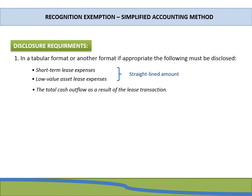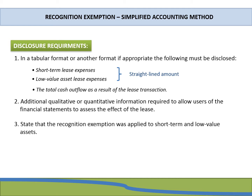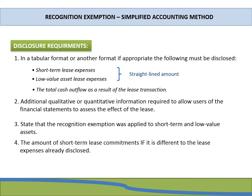The lessee must also disclose the total cash outflow experienced as a result of the lease transaction, as well as any additional qualitative or quantitative information required to allow users of the financial statements to assess the effect the lease has on the entity. The lessee must disclose the fact that they have elected to apply the recognition exemption, and must also disclose the amount of short-term lease commitments at the end of the reporting period if this differs from the short-term lease expenses already disclosed.